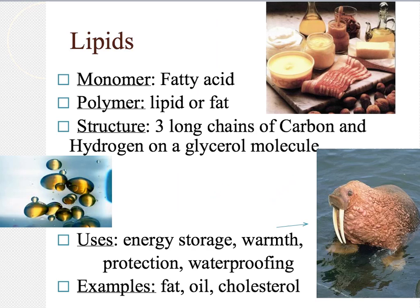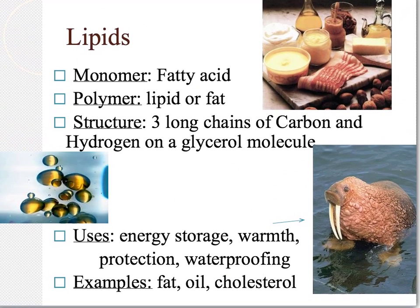The next macromolecule we'll be talking about is lipids. Lipids is just another word for fats. The monomer, the smallest unit of a lipid, is called a fatty acid. The polymer, or the larger unit, is just called a lipid or a fat. The structure is three long chains of carbon and hydrogen on a glycerol molecule. Animals use fats to store energy for times when we don't have food, are doing excessive exercise, or healing after an injury. Fat also can be used for warmth — like the walrus on the right, who has a lot of blubber that keeps him warm in the freezing cold water.